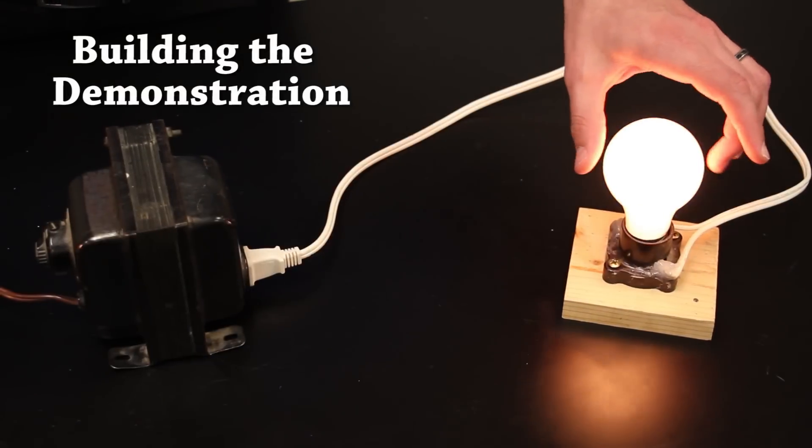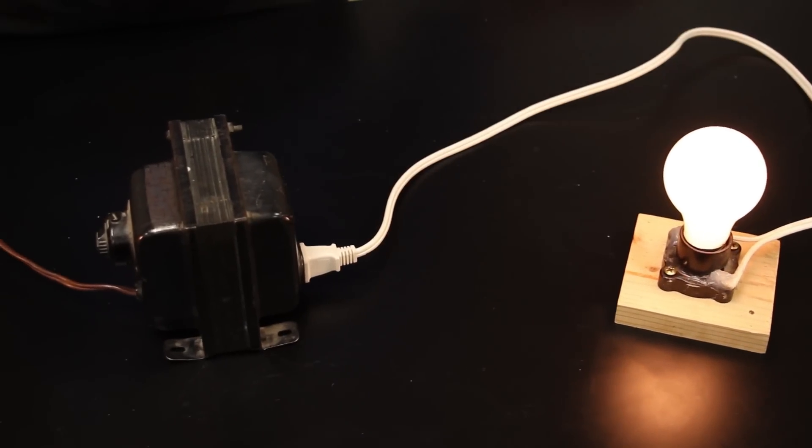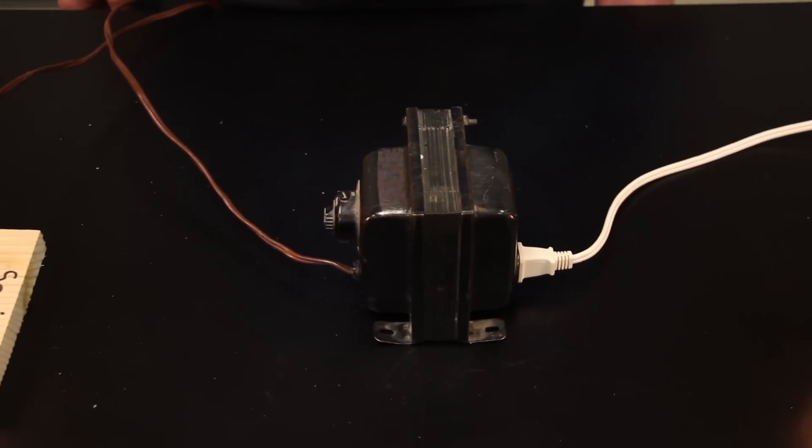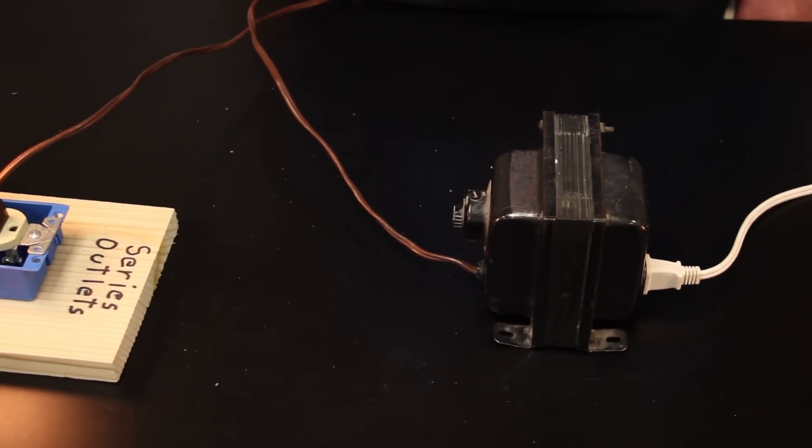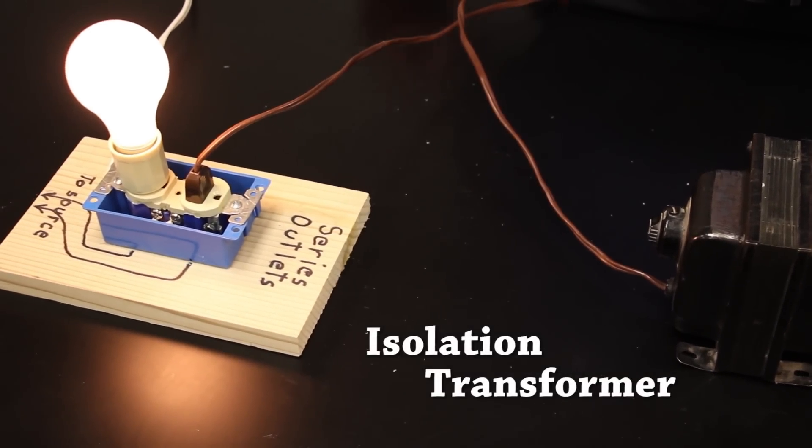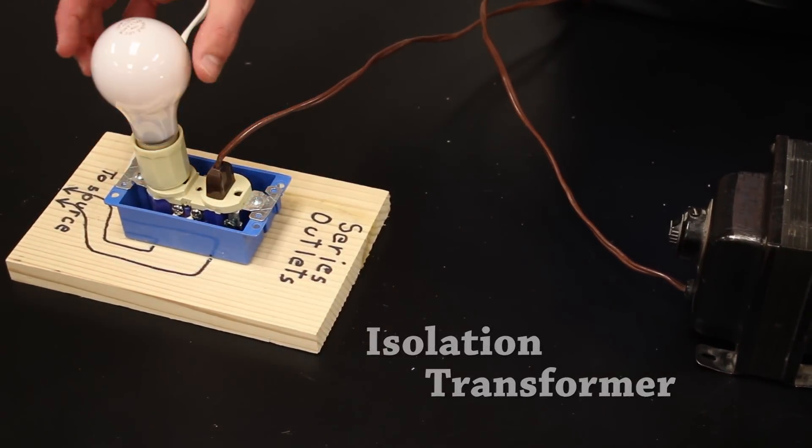If you want to do this demonstration yourself, you must have an efficient transformer, and you should try to have the same wattage bulbs at the appropriate voltages in the primary and secondary circuit. For this purpose, we used an isolation transformer, that is, a transformer with a turn ratio of 1 to 1.